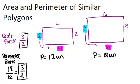So let's go on now to area. The area of a rectangle is base times height. So for the smaller rectangle, that's eight units squared, and for the larger rectangle, that's 18 units squared.